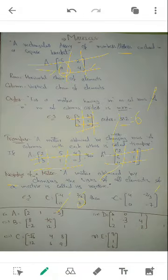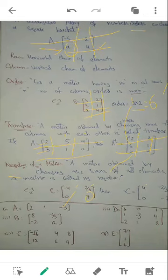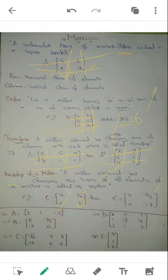To summarize: a matrix is a rectangular array of numbers or letters. Left to right is a row; top to bottom is a column. Order is number of rows × number of columns. Interchanging rows and columns gives the transpose. Changing all signs gives the negative of a matrix. You have been assigned five questions to find the order, transpose, and negative of five matrices. We will move to higher-level content in the next lecture.